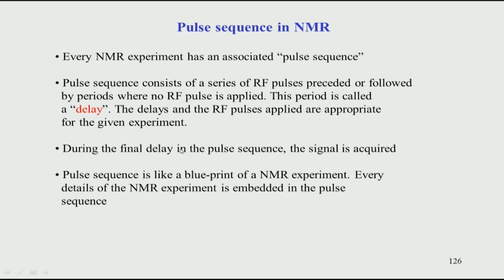Now let us see how we actually experimentally record NMR data — the practical aspects. This will be useful if you are setting up an NMR experiment on a spectrometer, so you should know the different parameters involved and how a spectrum depends on them. In NMR spectroscopy, it is very critically dependent on parameters. Many commercially available spectrometers have all these parameters set by default, so many students and users who record NMR spectra never get to see or feel these values. But as an NMR expert or spectroscopist, it is very important to understand the different parameters used in setting up an NMR experiment.